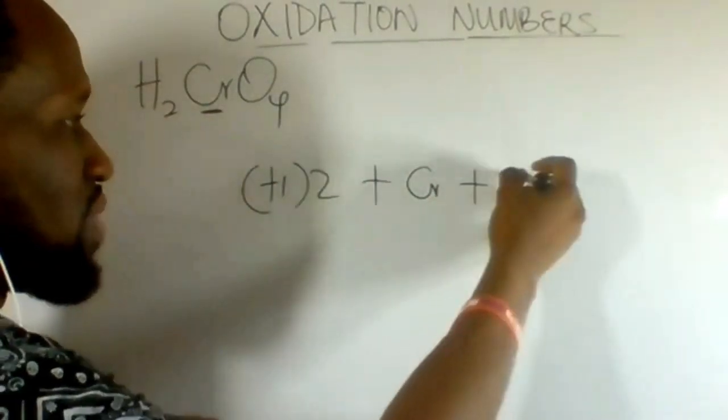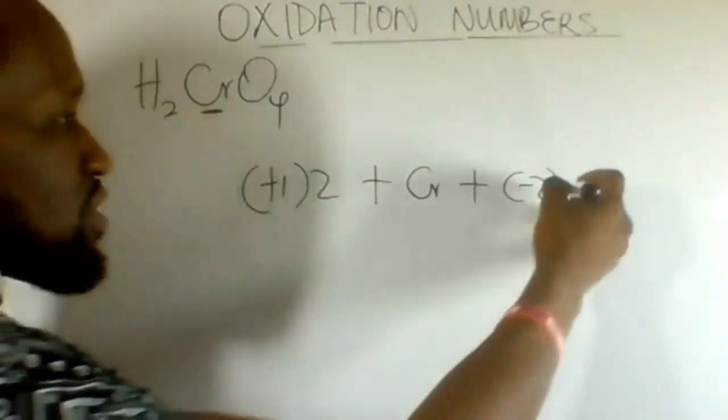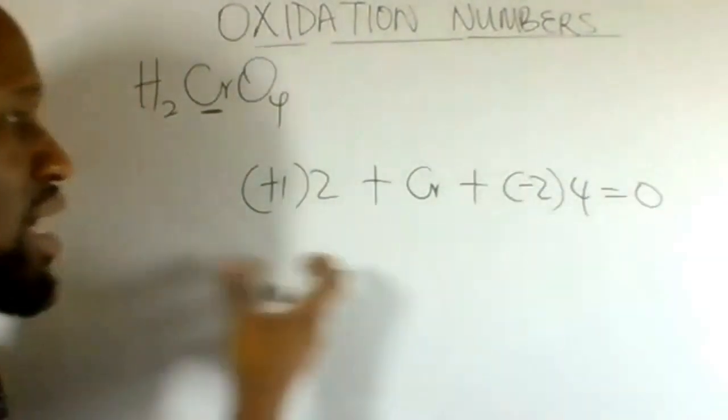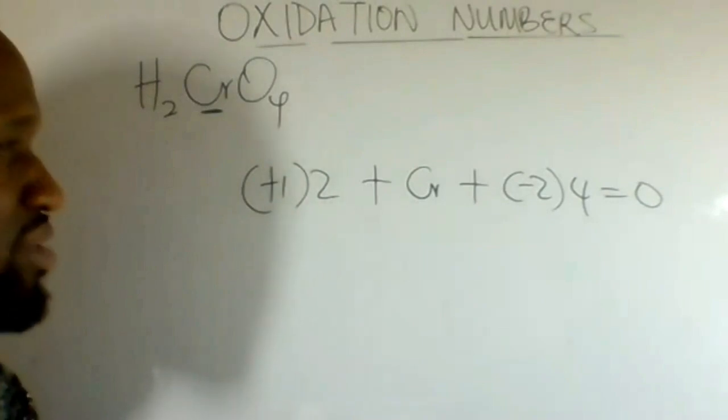Oxygen is in group 6. It's minus 2. We have 4 atoms of that equated to 0. Add the individual oxidation number of the atoms and equate to 0.